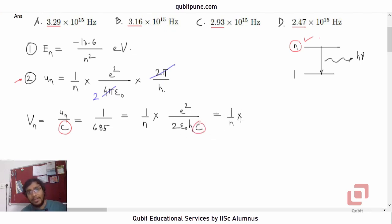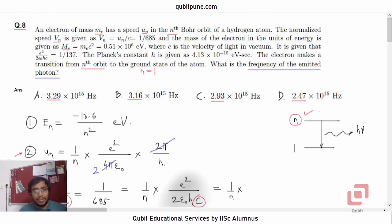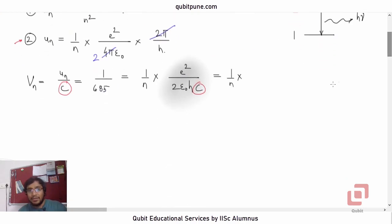Now if you read the problem carefully again, you will find that the value of this constant has also been given in the problem: e squared upon 2 epsilon naught hc. It is this one, how much is that? That is 1 upon 137. So this is 1 upon 137.